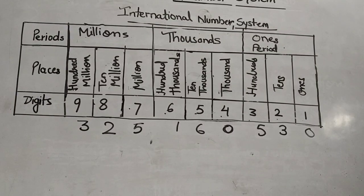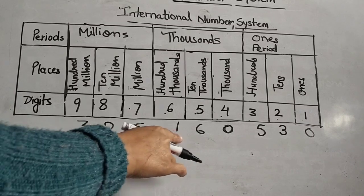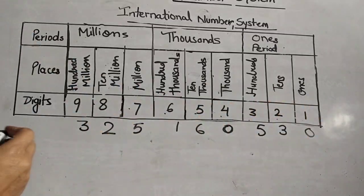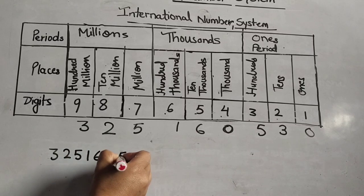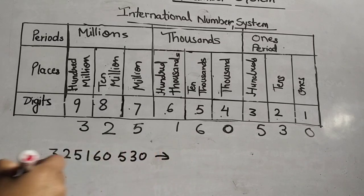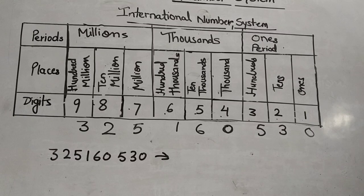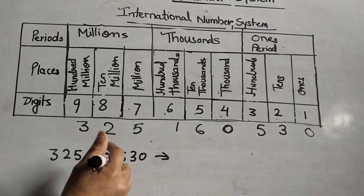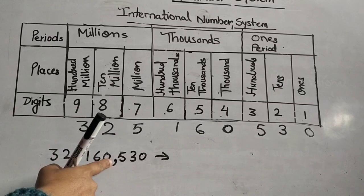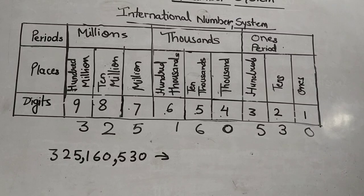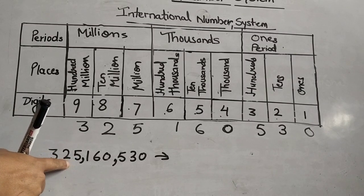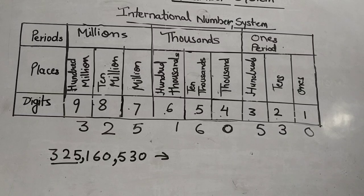Let's try one more example with the nine-digit number: 3 2 5 1 6 0 3 5 3. Start putting commas: ones, tens, hundreds for the ones period; thousands, ten thousands, hundred thousands for the thousands period; then millions, ten millions, and hundred millions — three periods in total.